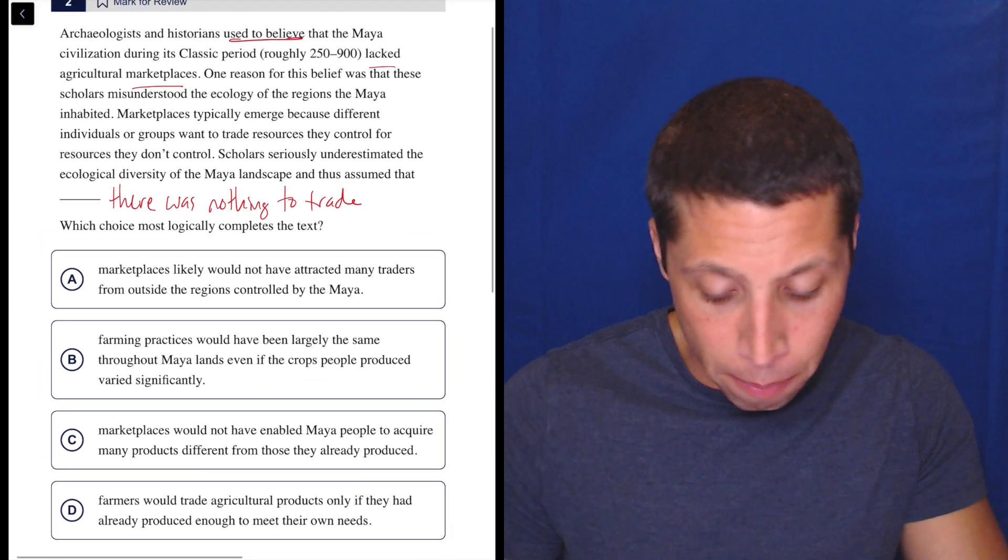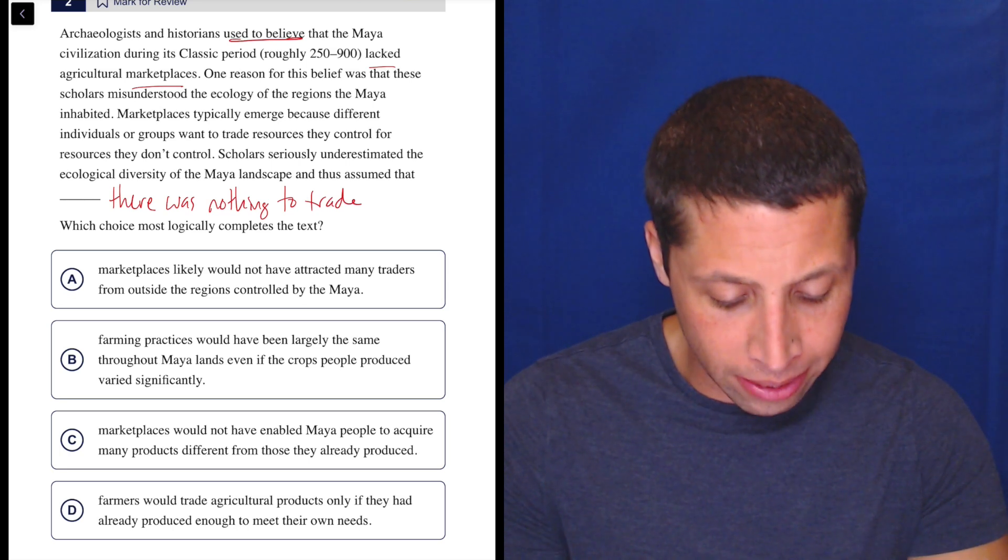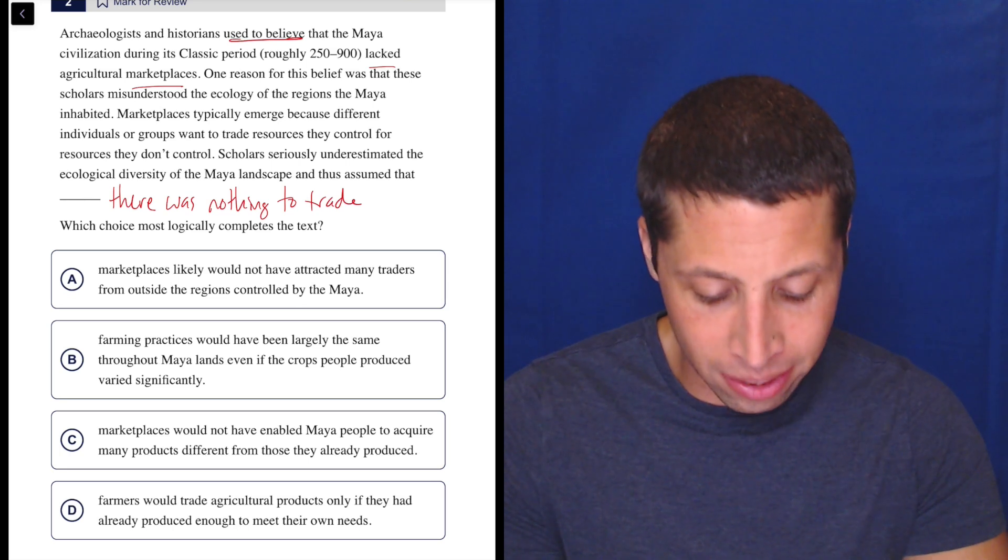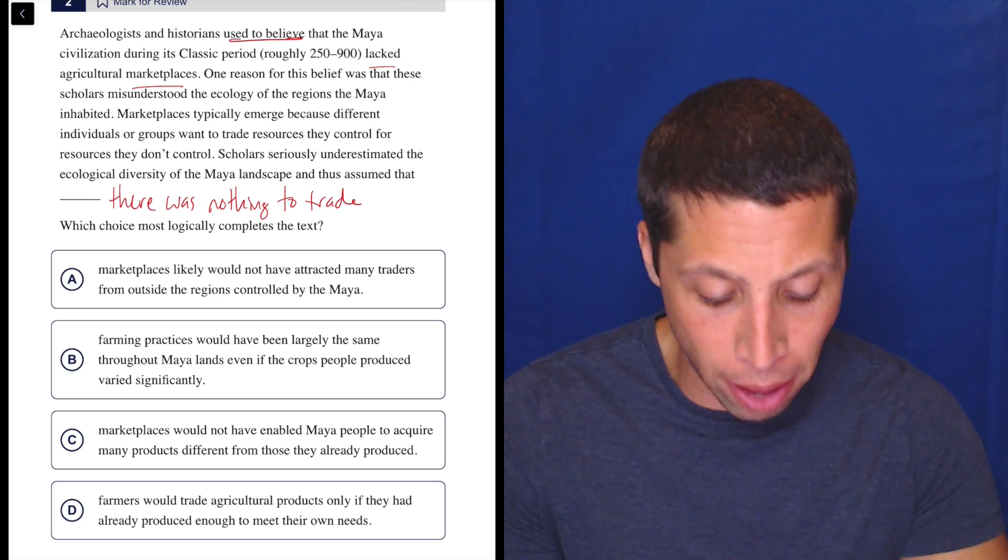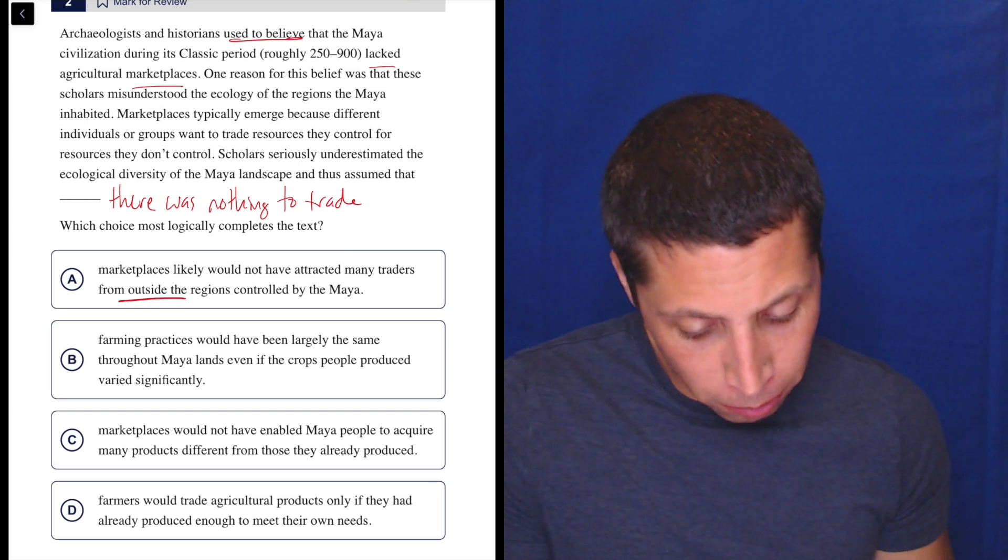The scholars seriously underestimated the ecological diversity of the Maya landscape and thus assumed that: A, marketplaces likely would not have attracted many traders from outside the regions controlled by the Maya. Well, outside the regions controlled by the Maya.